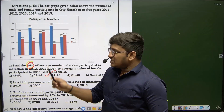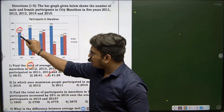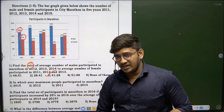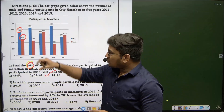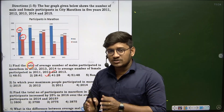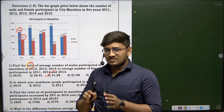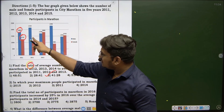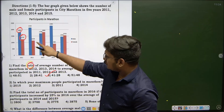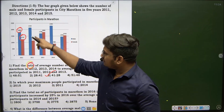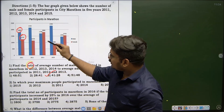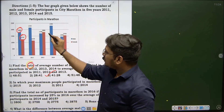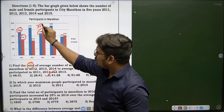For 2011: 1800 plus 1250 gives 3050 participants. For 2012: 2150 plus 1150 gives 3300. For 2013: 1700 plus 1800 gives 3500, which is the highest so far.